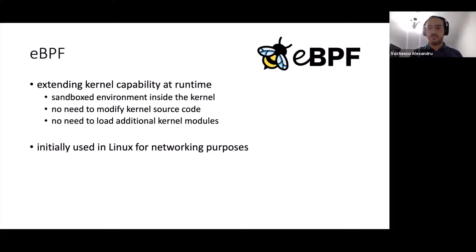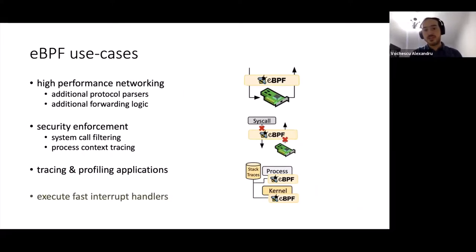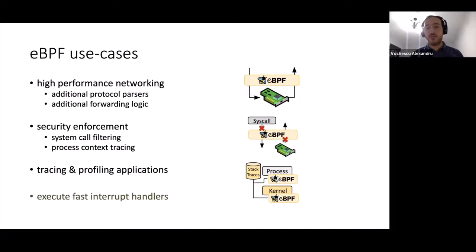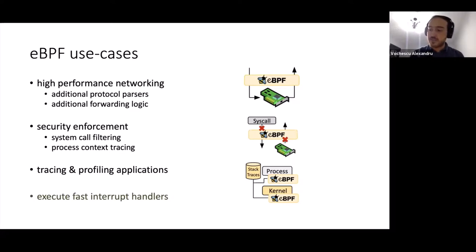Initially, the eBPF standard was created for networking purposes — hence the name, extended Berkeley Packet Filter. The three main original use cases are: managing high-performance networking, such as adding protocol parsers or forwarding logic at runtime when a packet arrives; security enforcement, including system call filtering and process context tracing; and enabling eBPF programs that run as breakpoints throughout a process.